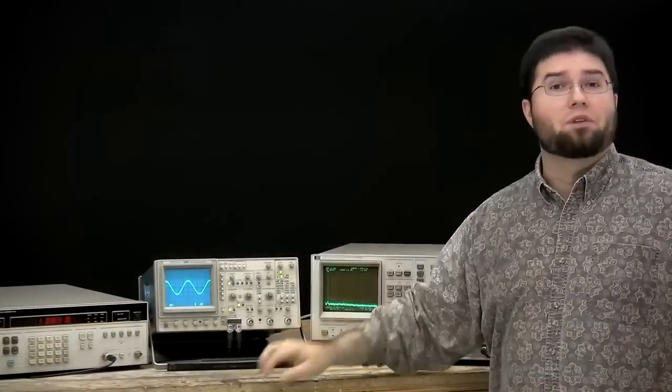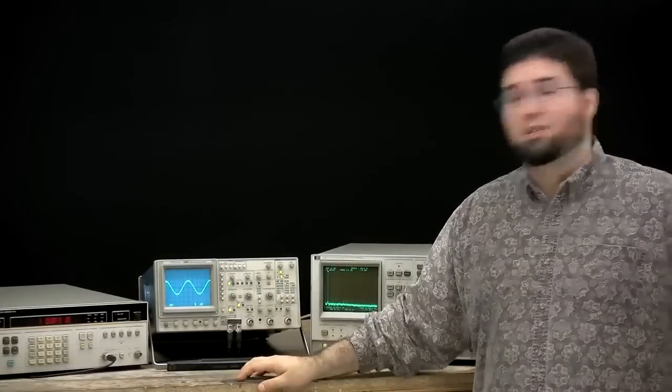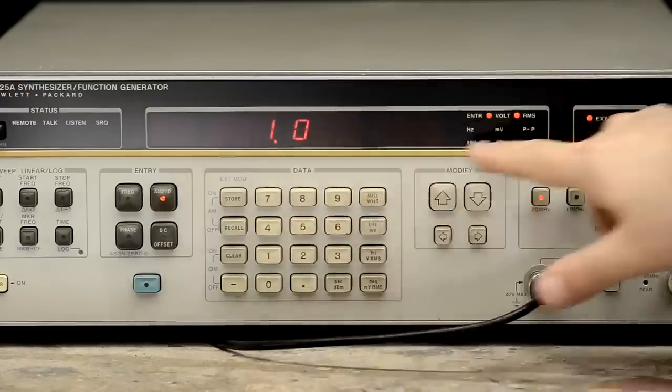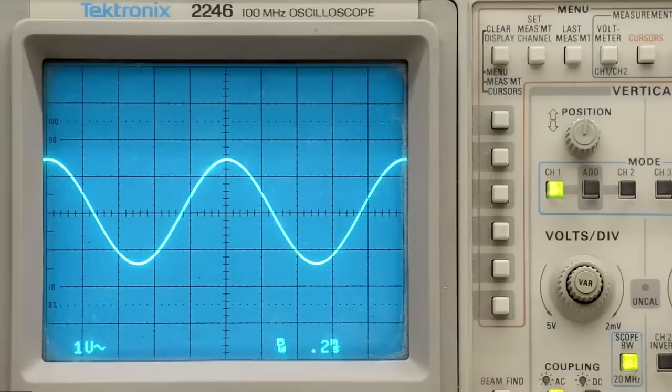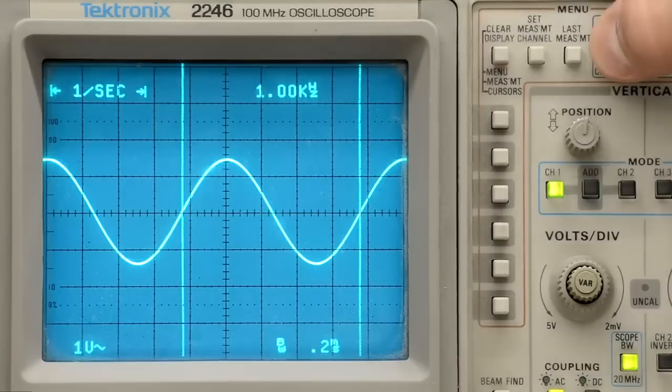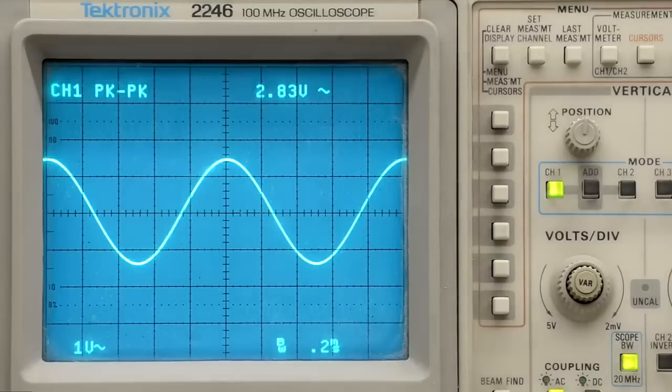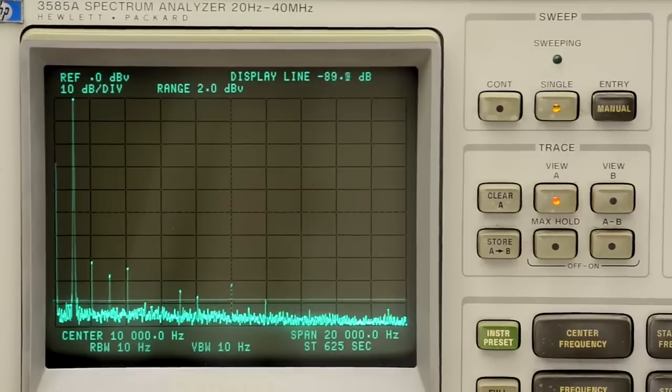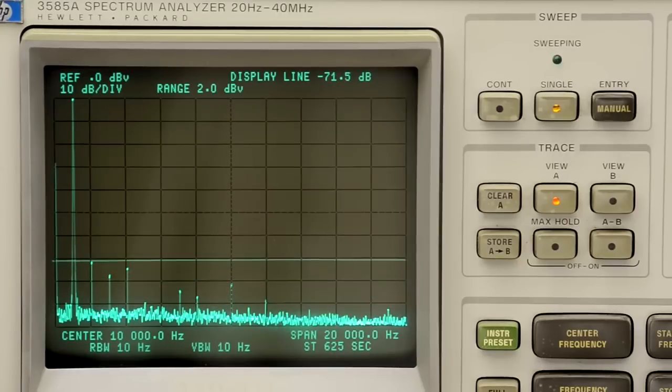At the moment, we have our signal generator set to output a nice one kilohertz sine wave at one volt RMS. We see the sine wave on the oscilloscope, can verify that it is indeed one kilohertz at one volt RMS, which is 2.8 volts peak-to-peak. And that matches the measurement on the spectrum analyzer as well.